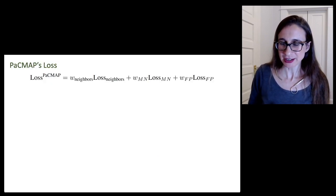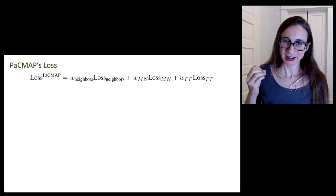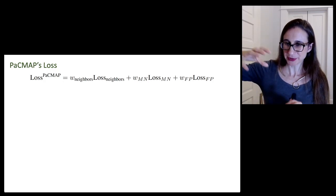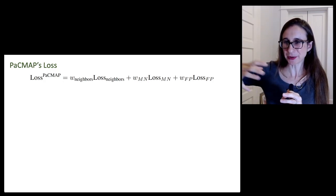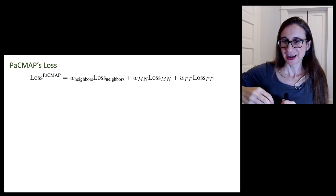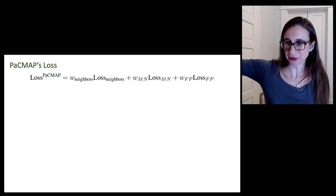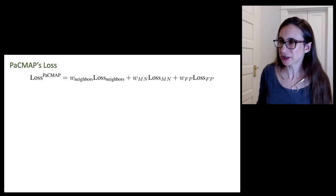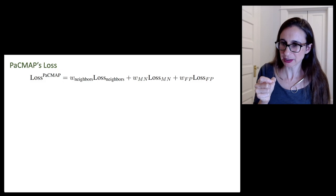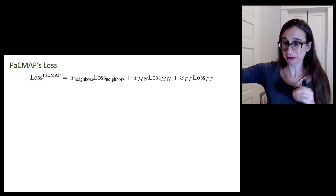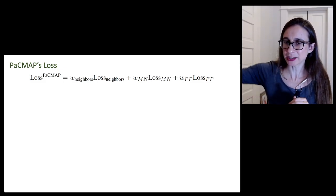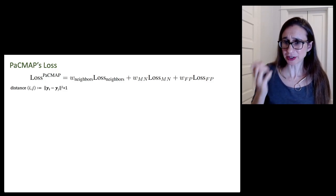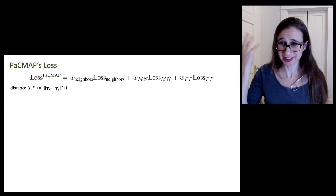PacMap's loss function has three terms in it. It's got a term for neighbors. It's got a term for mid-near pairs, which are sort of farther away neighbors you want to attract. And then it has a loss function for further away points where you want to repulse them. If two points are close in the high dimensional space, you want to keep them close in the low dimensional space. And if two points are far in the high dimensional space, you want to keep them far away during the projection.